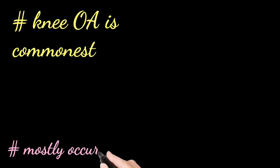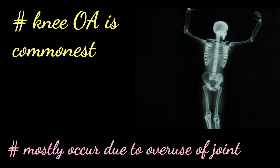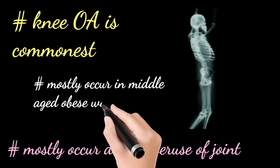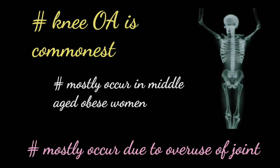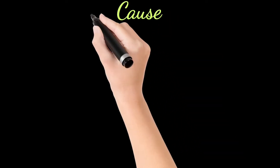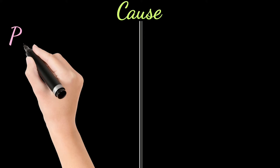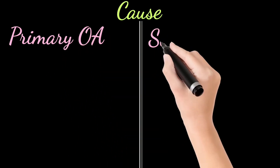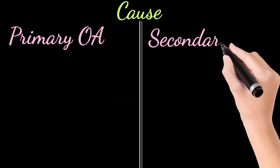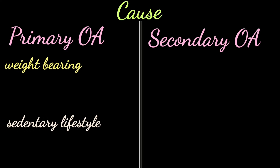Knee osteoarthritis is very common nowadays and it mostly occurs due to the overuse of the joint. Middle-aged obese women are the most commonly affected. Now coming to the causes — I know it's a little boring, but it's very important. There are two types: primary OA and secondary OA.